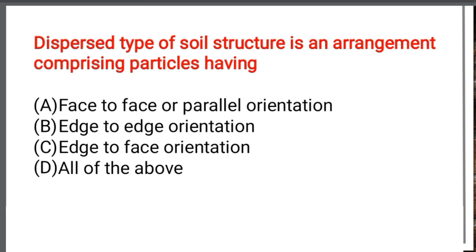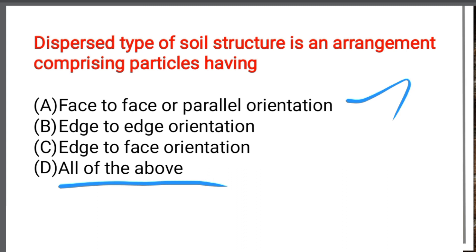Dispersed type of soil structure is an arrangement comprising particles having — Option A: Face to face or parallel orientation. Option B: Edge to edge orientation. Option C: Edge to face orientation. Option D: All of the above. The correct answer is Option A: Face to face or parallel orientation. Note that whenever the option 'All of the above' appears, we should not always default to it — we have to choose the correct answer.